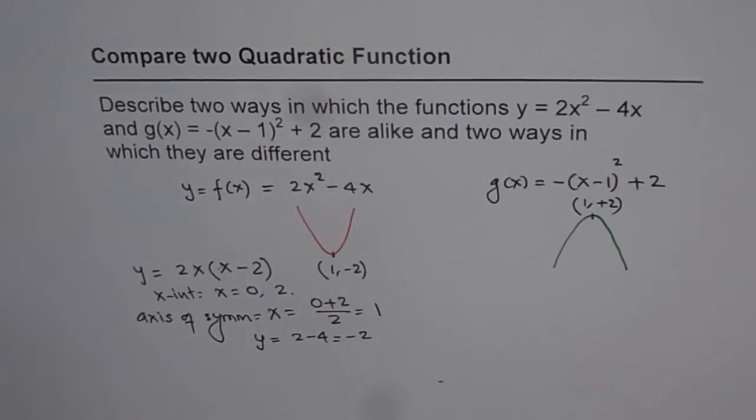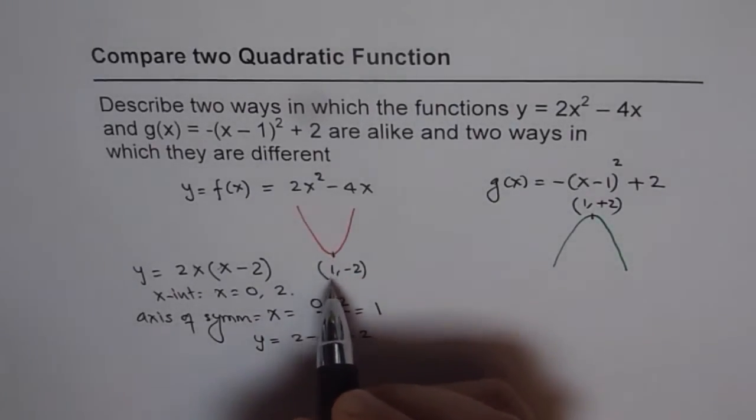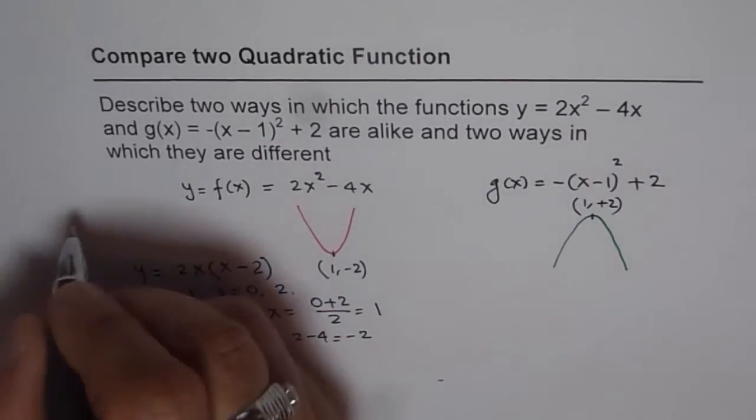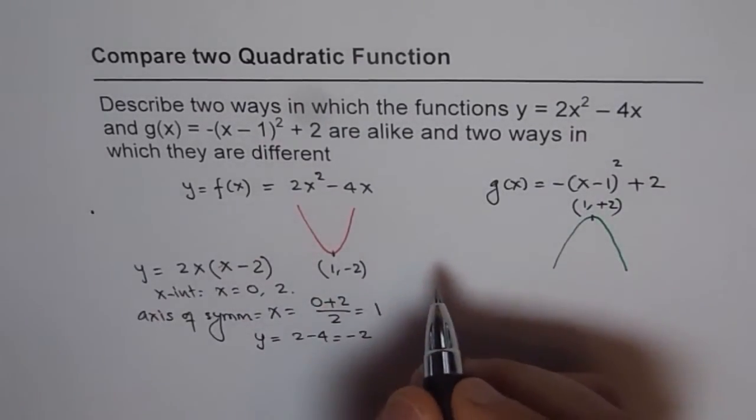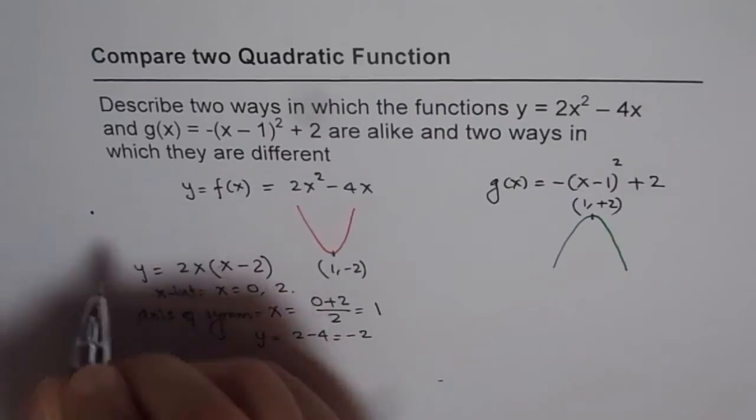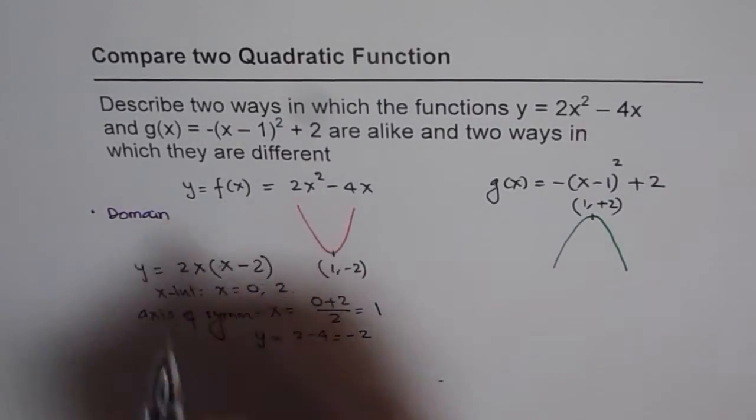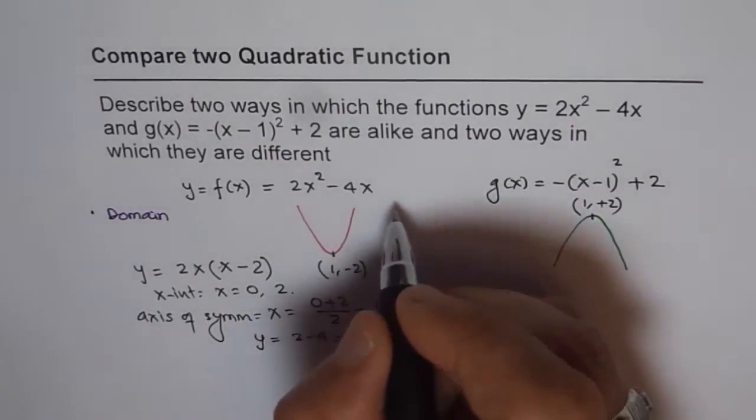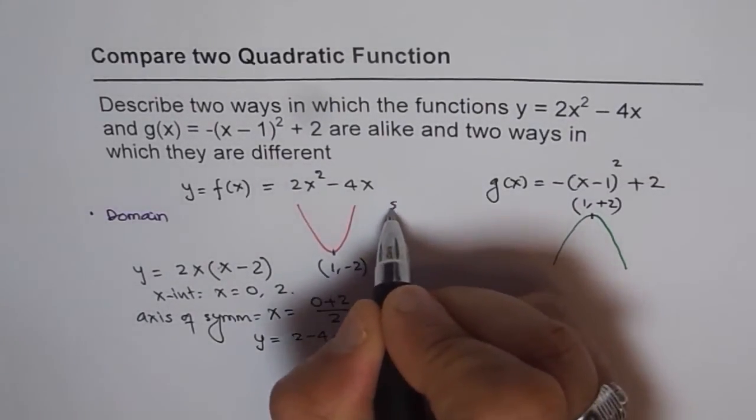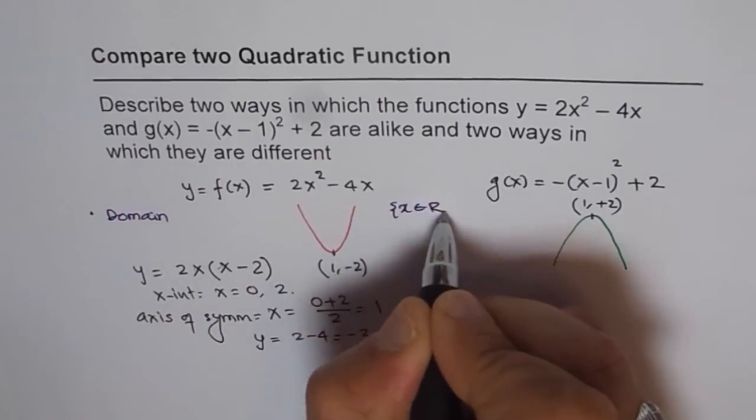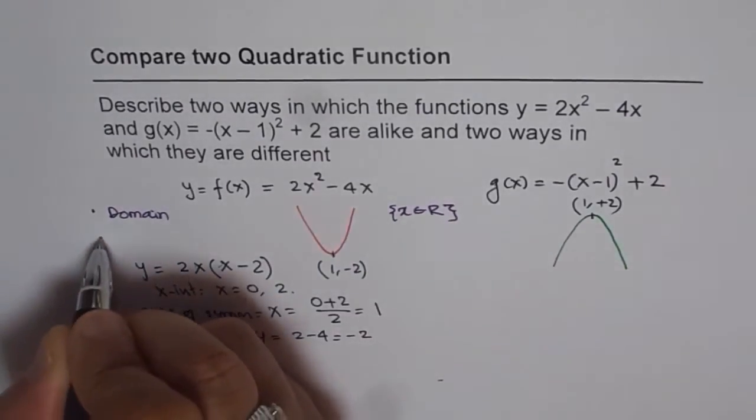Now let's look into similarities first. I think two similarities which stand out are, one, between any two parabolas, we should always say domain is real numbers. So domain for both is, let me write down here, they are similar to both. So I'll write x belongs to real numbers. That is the first similarity.